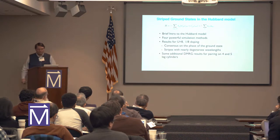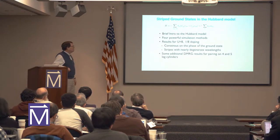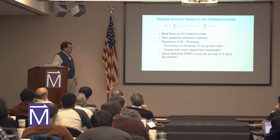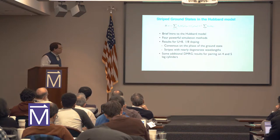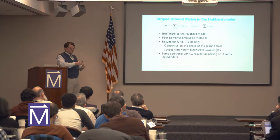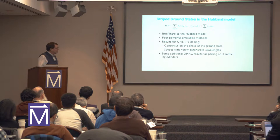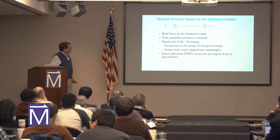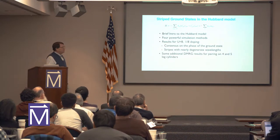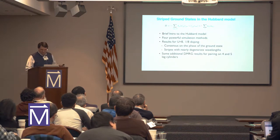That wasn't clear that was going to happen at the start. So we get a consensus on the phase of the ground state, and we found something surprising, which is the filling of the stripes was not what we expected. It turns out that they're very nearly half-filled over a range of densities along the stripe. More recently, we've gotten some additional results on the pairing — this is more specific to DMRG, and I'm going to show some of that.